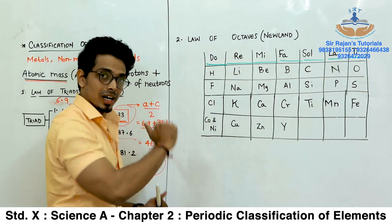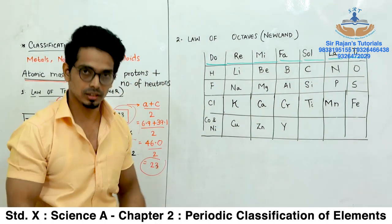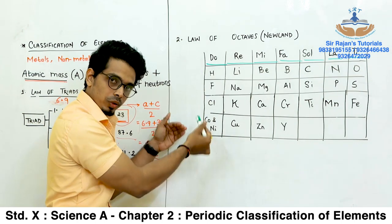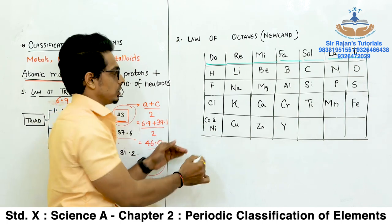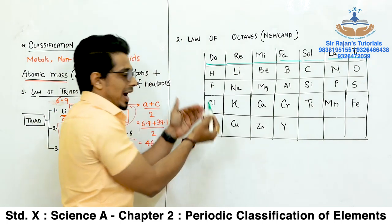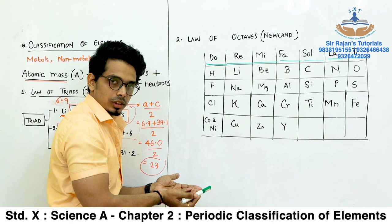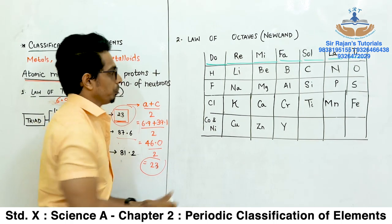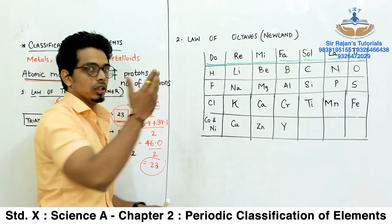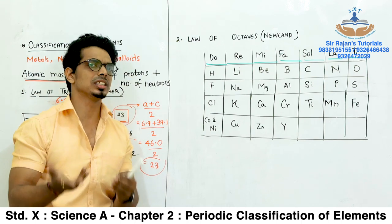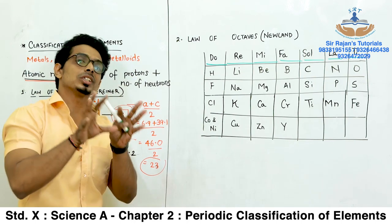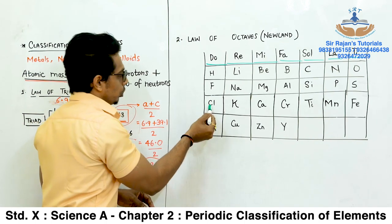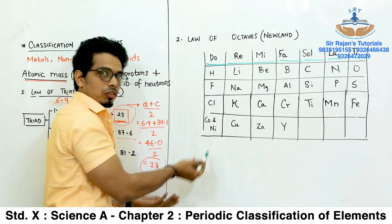This major drawback was overcome by Mendeleev in his periodic table. For the probable exam questions related to these two laws: you should know the law properly. When writing the Law of Triads, remember to explain it with the help of one example — marks will be deducted otherwise. For the Law of Octaves, only the law is required — no example needed. The most important question will be about the limitations or disadvantages of Newland's Law of Octaves. You have 5 points altogether, and 4 points will fetch you 2 marks easily.